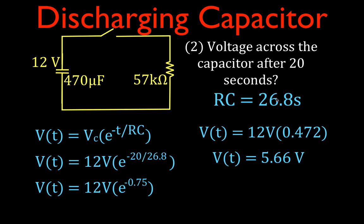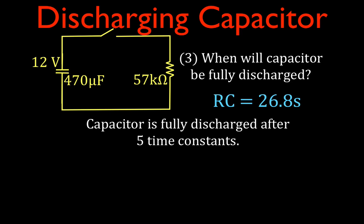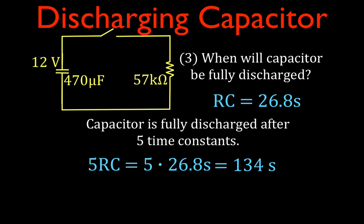This is less than one time constant, so the voltage is greater than the 4.41 volts we found after one time constant. Now the last thing we'll do is figure out when the capacitor will be fully discharged. One time constant is 26.8 seconds, and we consider the capacitor fully discharged after five time constants. It's an exponentially decaying curve — it never truly reaches zero in theory — but after five time constants we say it's fully discharged. So five times 26.8 gives us 134 seconds.